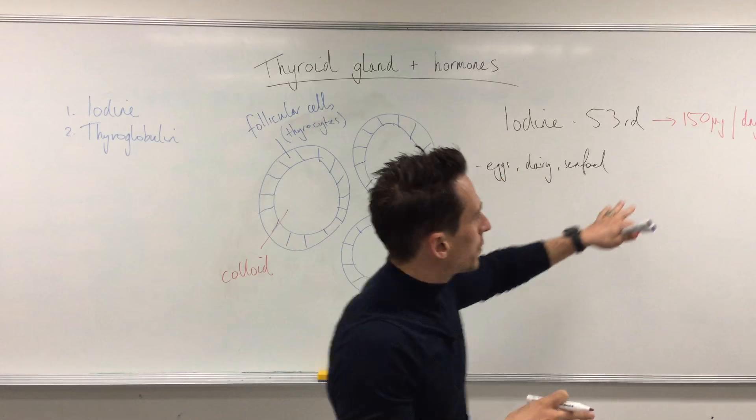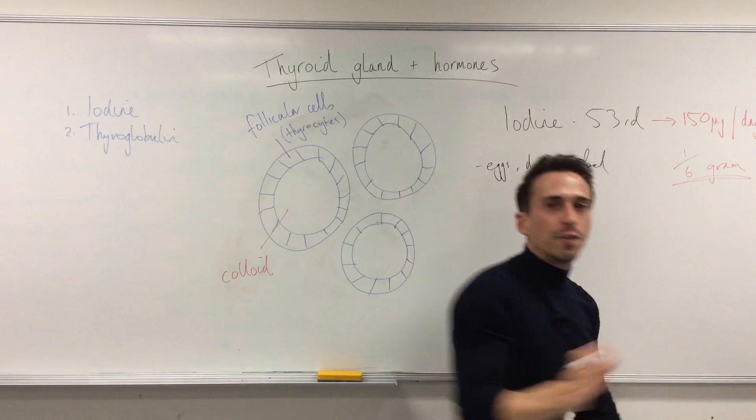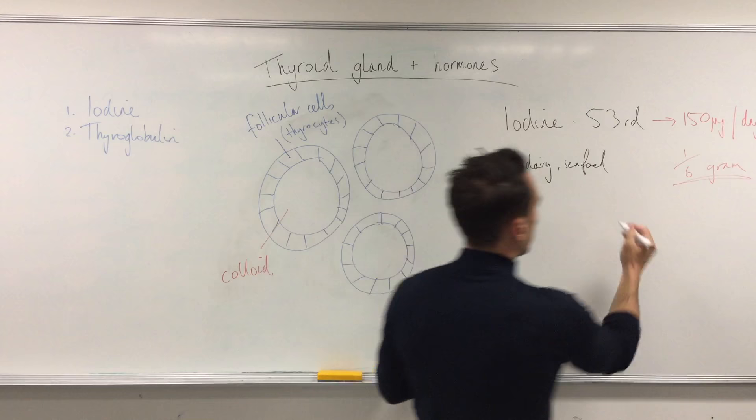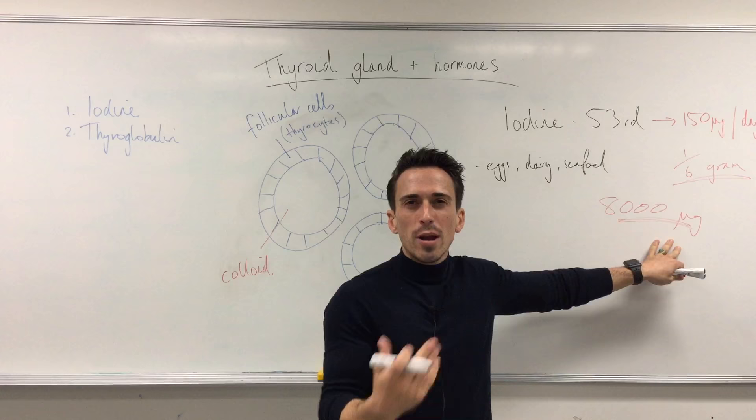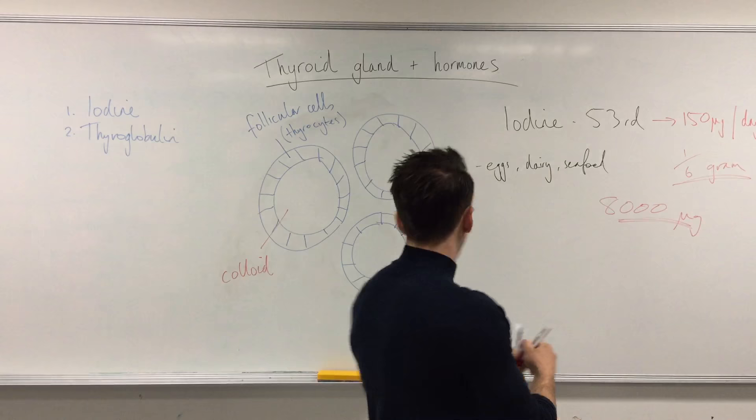For a 70 kilogram adult, in a 24-hour period you need 150 micrograms of iodine per day — around about a sixth of a gram. Fortunately, our thyroid maintains a pool of iodine: around 8,000 micrograms of iodine in the form of iodide stored within the thyroid, which is about 50 days' worth of storage.